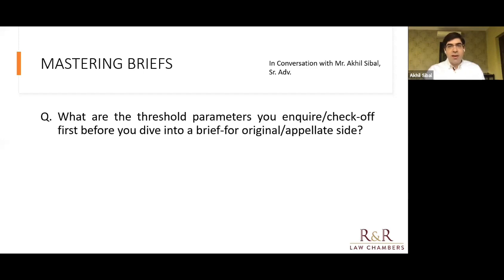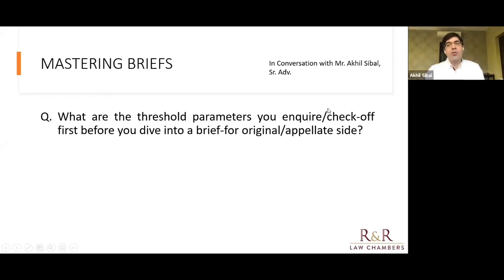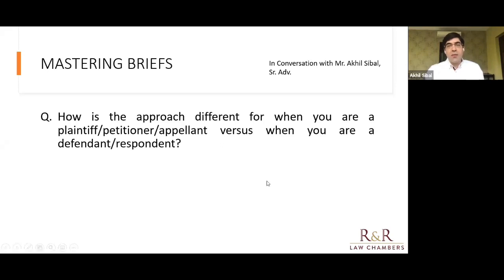In some other jurisdictions, the proceedings are transcribed so you have a more complete record, but that's not the case with us. There have been some judges in the Delhi High Court who would dictate a note at the end of each proceeding in the counsel's presence, capturing the arguments made. But that note wouldn't form part of the order — it only served as an aide-mémoire for the judge for the next time, so he could recall what transpired, what arguments were made, what issues remained to be considered. I recall Justice Sudarshan Mishra doing this, and I felt it was quite useful. So all the judge has in our system, in terms of what's happened in the case, is the order sheet. It's essential that you have the complete order sheet.